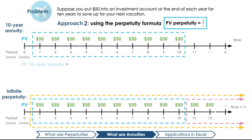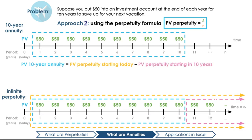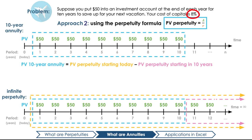Let's compare this 10-year annuity to a situation where you would pay $50 each year in perpetuity. We're interested in calculating the present value of this section here. Basically, we want to know the value of the investment if cash flows continue forever, minus the value of the investment if cash flows continue forever starting 10 years from now. Essentially, the value of our annuity is the value of one perpetuity minus another perpetuity beginning later. So we can use this formula to solve for the present value of our annuity. Our cost of capital, or discount rate, is 8%.